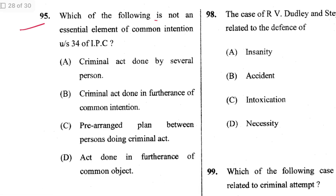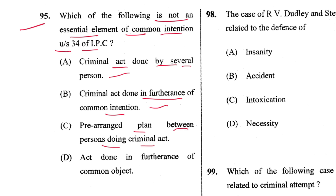Question 95: Which is not an essential element of common intention under Section 34? Criminal act done by several persons — yes. In furtherance of common intention — yes. Pre-arranged plan — yes. Act done in furtherance of common intention — B and D are contradictory; only one can be correct. Since D repeats what B says, D is not an essential element. D is the answer.